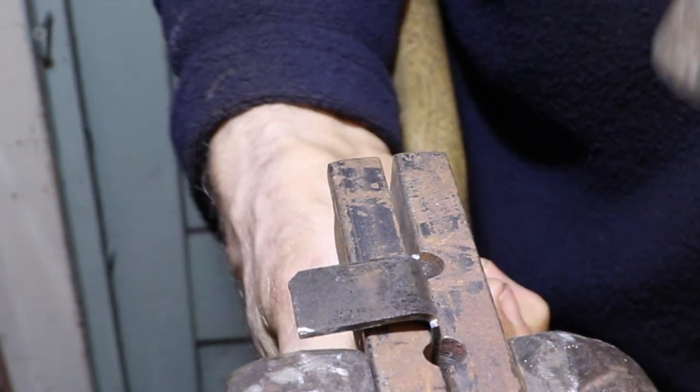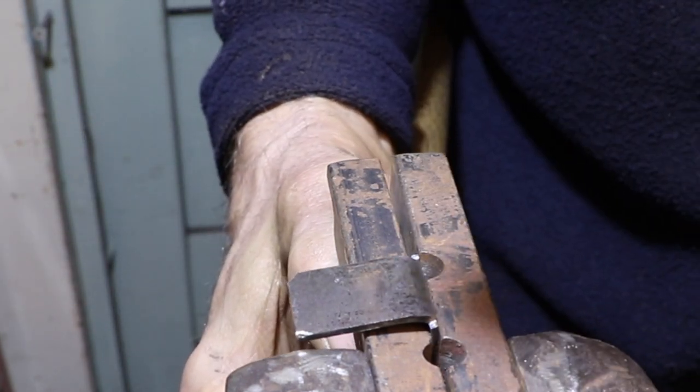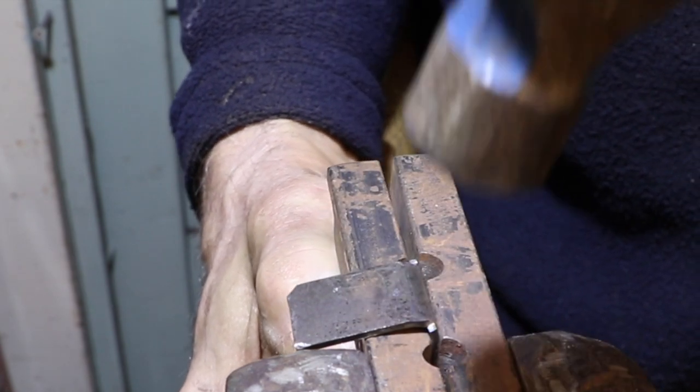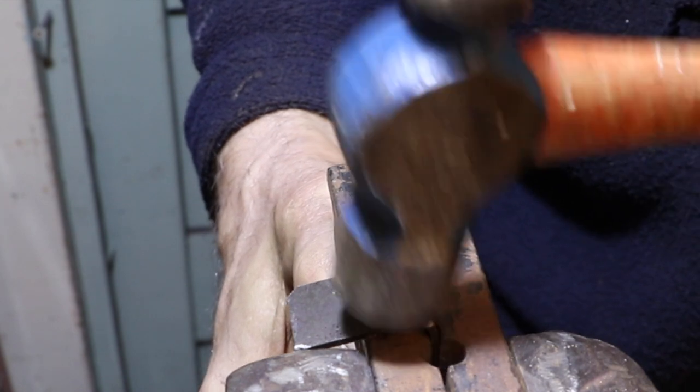At this point the square corner is forged pretty much the same way as a hot square corner. You use very light hammer blows and you work from each side of the square corner to refine that shape.